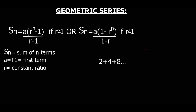Now let's look at the geometric series. A geometric series and an arithmetic series both find the sum of certain terms. The only difference is that for a geometric series, the series must be geometric, and for arithmetic, the series must be arithmetic. Remember, for a geometric series there is a constant ratio between the terms, but for arithmetic there is a constant difference between the terms.